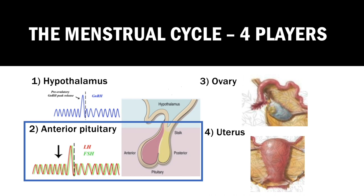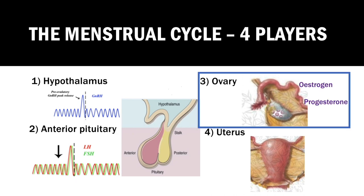Remember, the posterior pituitary is associated with pressure: pressure to preserve water, pressure to feed a screaming infant — so ADH and oxytocin respectively. Fertility is a non-pressure activity and hence it's in the anterior pituitary. Thirdly, we have the ovary, which houses the developing follicles. The developing follicles in turn respond to FSH and LH to produce oestrogen and progesterone.